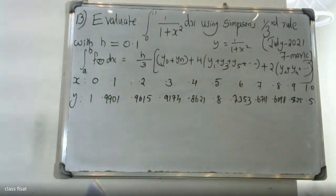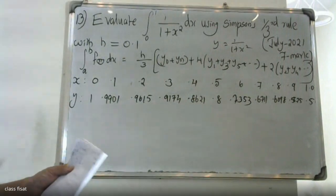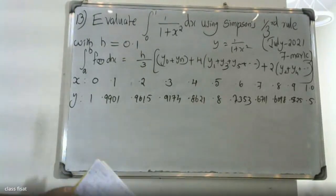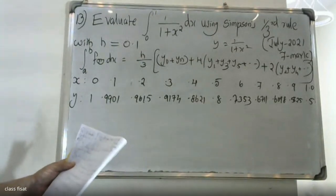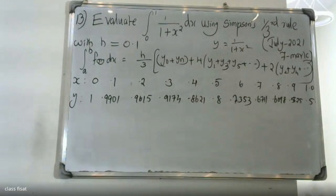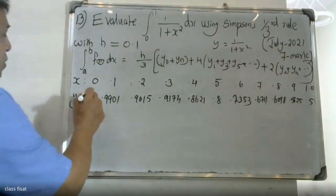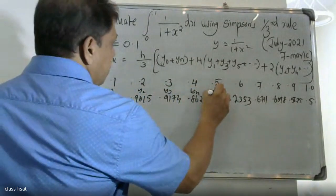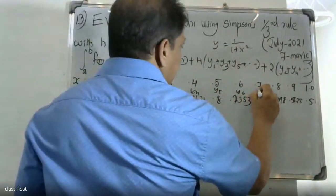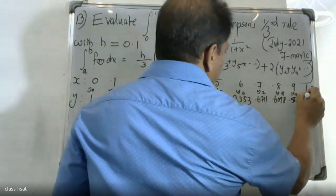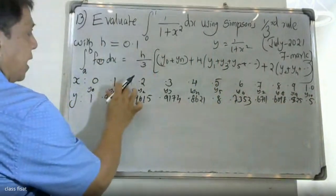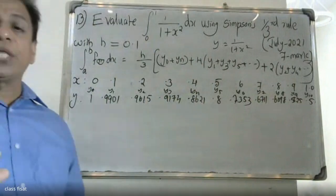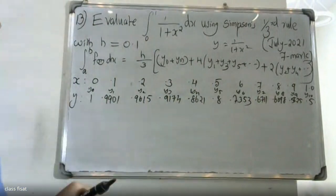This is Y6, this is Y7, this is Y8, this is Y9, this is Y10. Counting: 1, 2, 3, 4, 5, 6, 7, 8, 9, 10 — that is 10 intervals. Simpson's 1/3 rule requires the number of intervals to be even, and here the number of intervals is even.